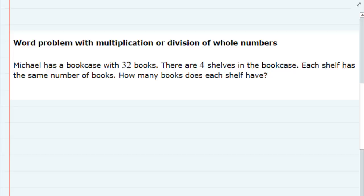How many books does each shelf have? So we know that there are a total, this time we're given the total, 32 books.